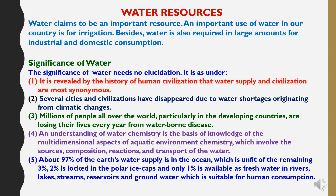Now, the second natural resource is water resources. Water is an important resource. An important use of water in our country is for irrigation. Besides, water is also required in large amounts for industrial and domestic consumption. The significance of water: first, the history of human civilization shows that water supply and civilization are most synonymous. Second, several cities and civilizations have disappeared due to water shortages originating from climatic changes. Third, millions of people all over the world, particularly in developing countries, are losing their lives every year from waterborne diseases. Fourth, an understanding of water chemistry is the basis of knowledge of the multidimensional aspects of aquatic environment chemistry, which involves the sources, composition, reactions, and transport of water.